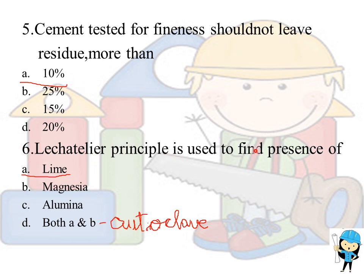The Le Chatelier principle is used to find the presence of lime. The autoclave method is used to find the presence of both lime and magnesia.